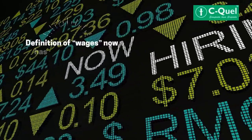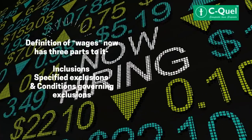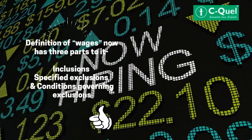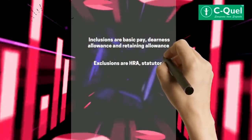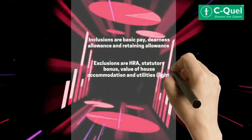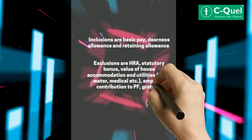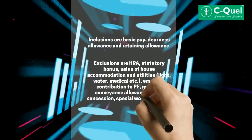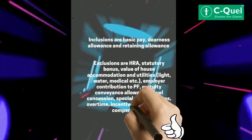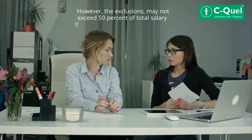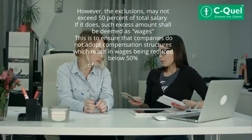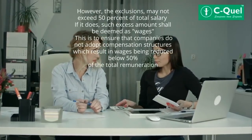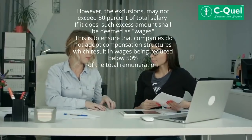The definition of wages now has three parts: inclusions, specified exclusions, and conditions governing exclusions. Inclusions are basic pay, dearness allowance, and retaining allowance. Exclusions are HRA, statutory bonus, value of house accommodation and utilities, employer contribution to PF, gratuity, conveyance allowance, travel concession, special work expenses, overtime, incentive, and retrenchment compensation. However, the exclusions may not exceed 50% of the total salary. If they do, such excess amount shall be deemed as wages. This is to ensure that companies do not adopt compensation structures which result in wages being reduced below 50% of the total remuneration.